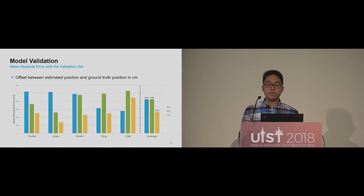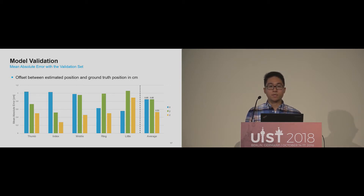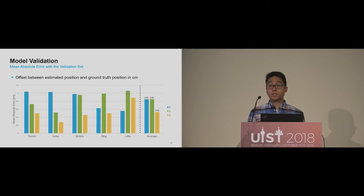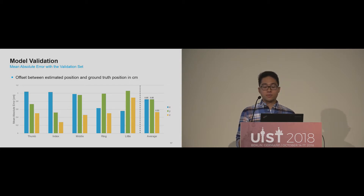We used the validation set to calculate the mean absolute error of our model, defined as the offset between the estimated position and the ground-truth position in centimeters. The average error for the x and y-axes is 0.85 centimeters, while the z-axis error is 0.53 centimeters. As a comparison, the average diameter of a human index fingertip is 1.6 to 2 centimeters, and previous work showed that traditional touch interaction has a systematic offset of 0.4 centimeters. With these errors, our model already enables precise interaction for use cases such as finger-specific gestures or finger placements as action modifiers on the backside.